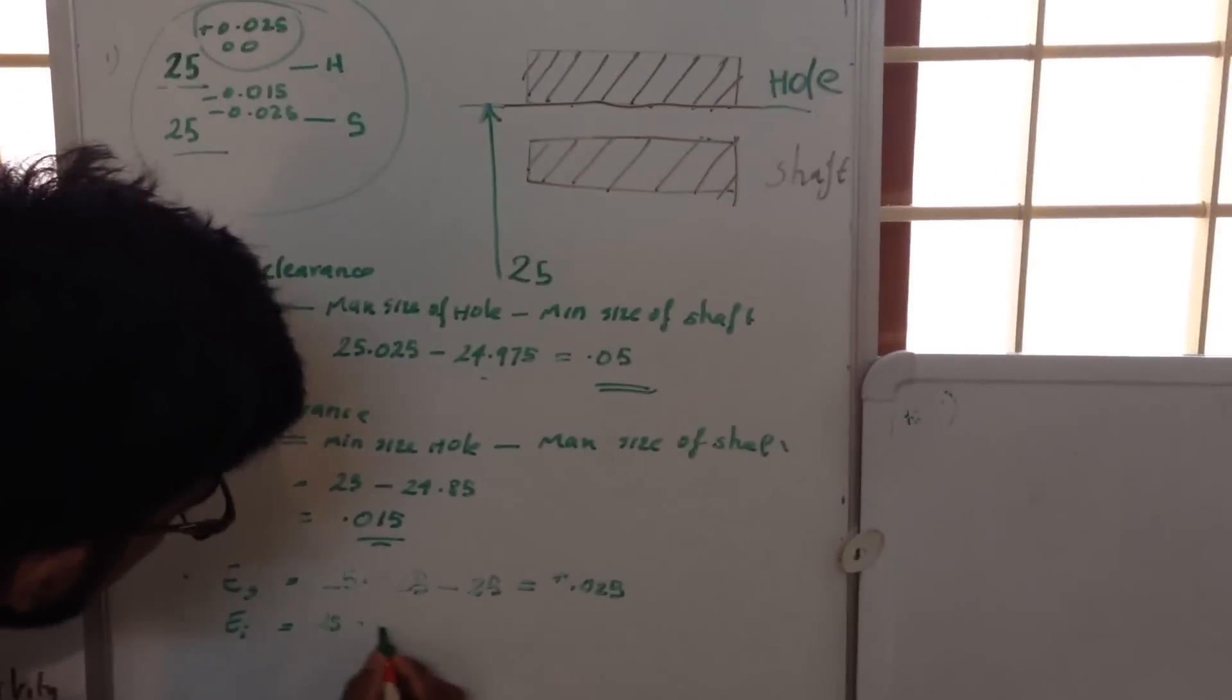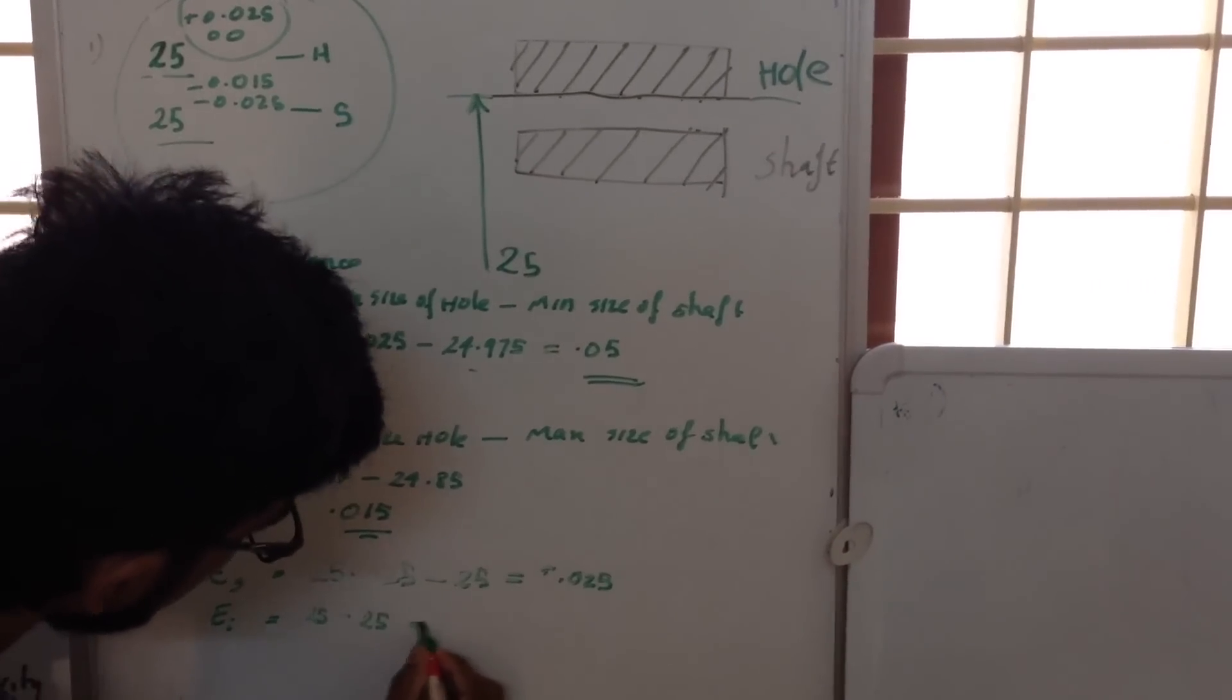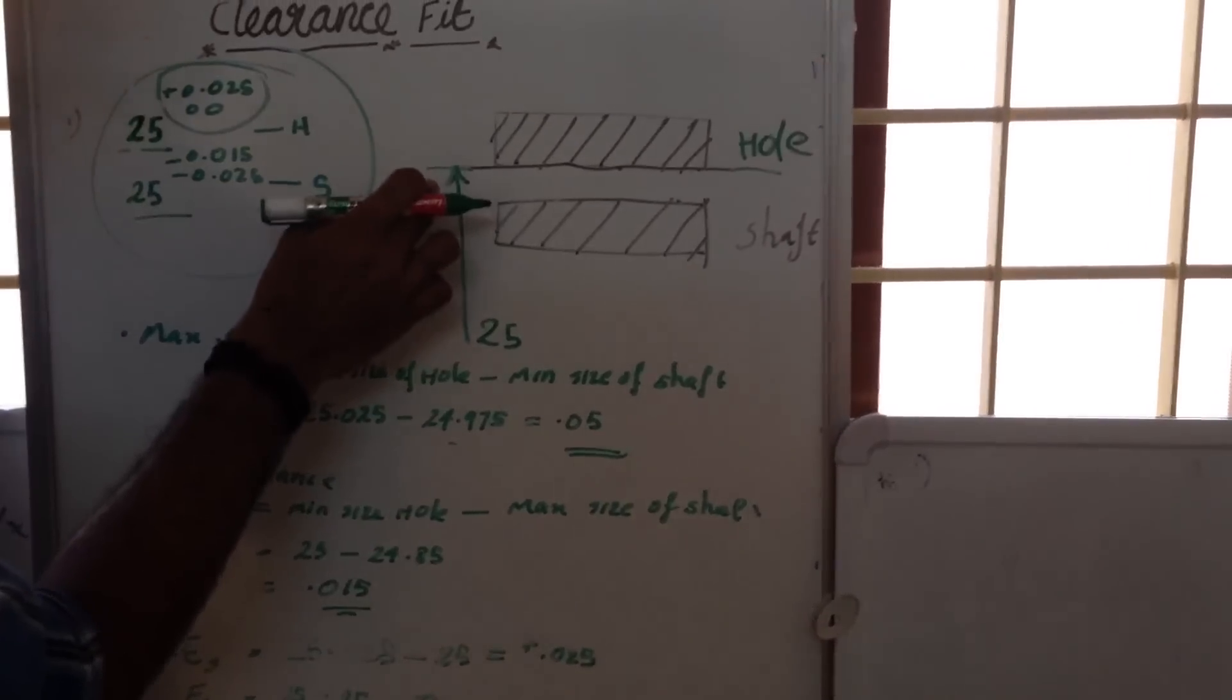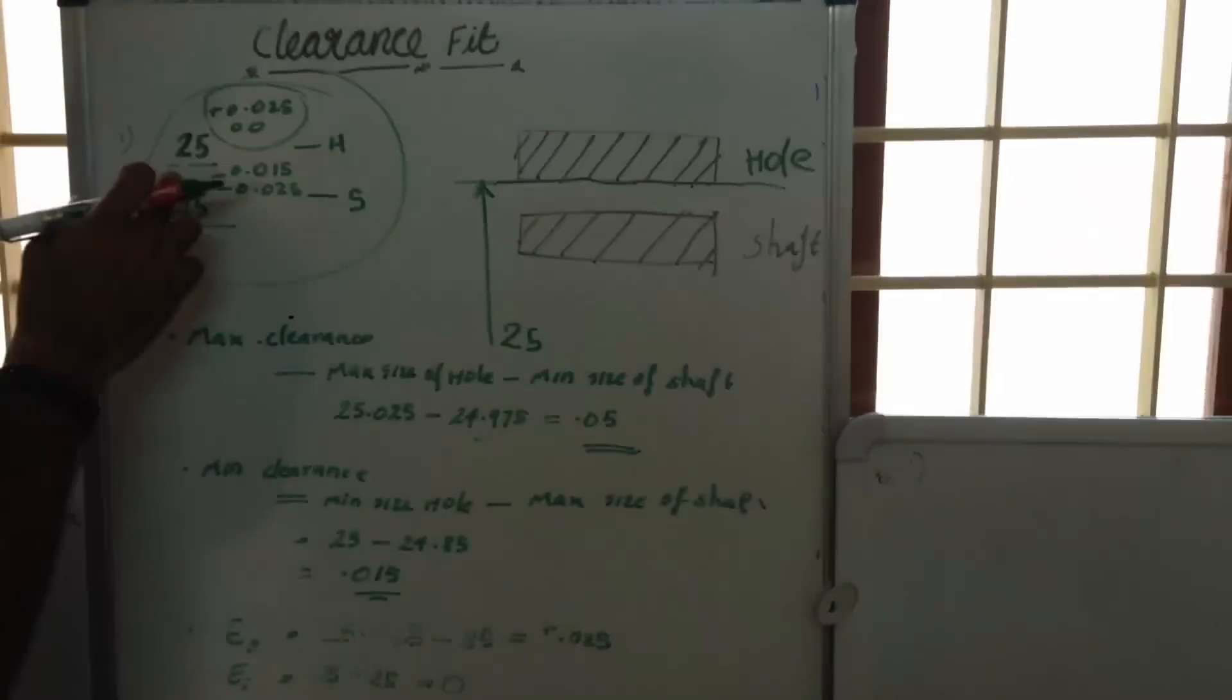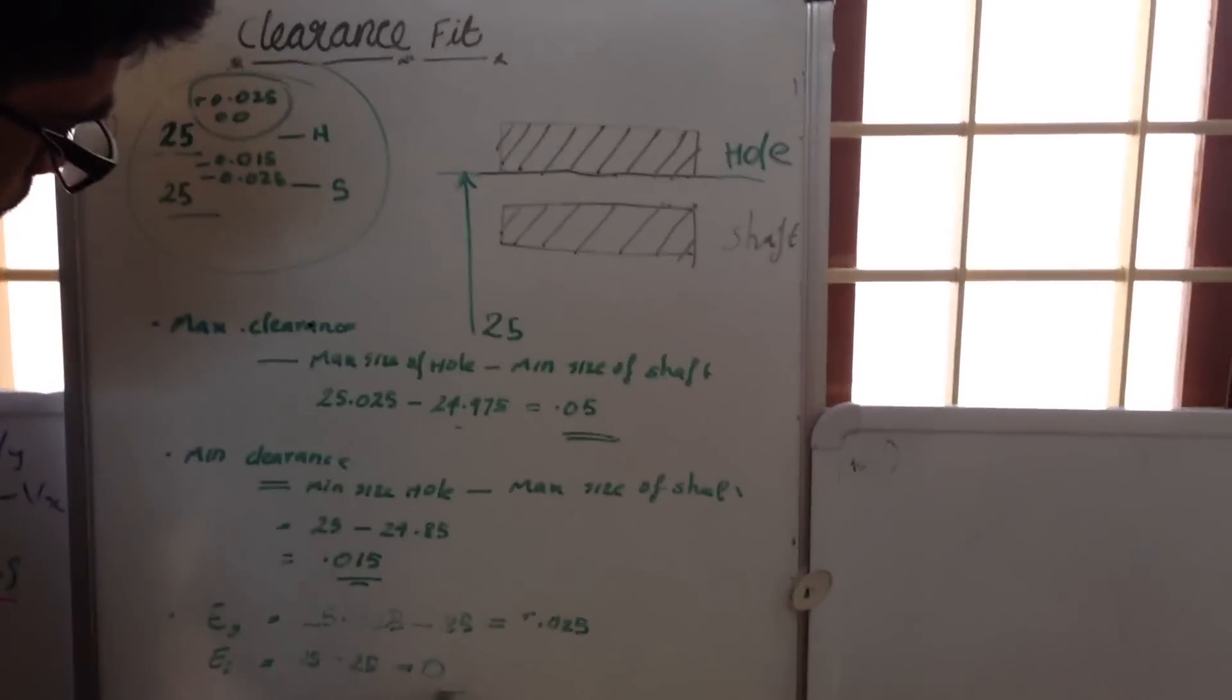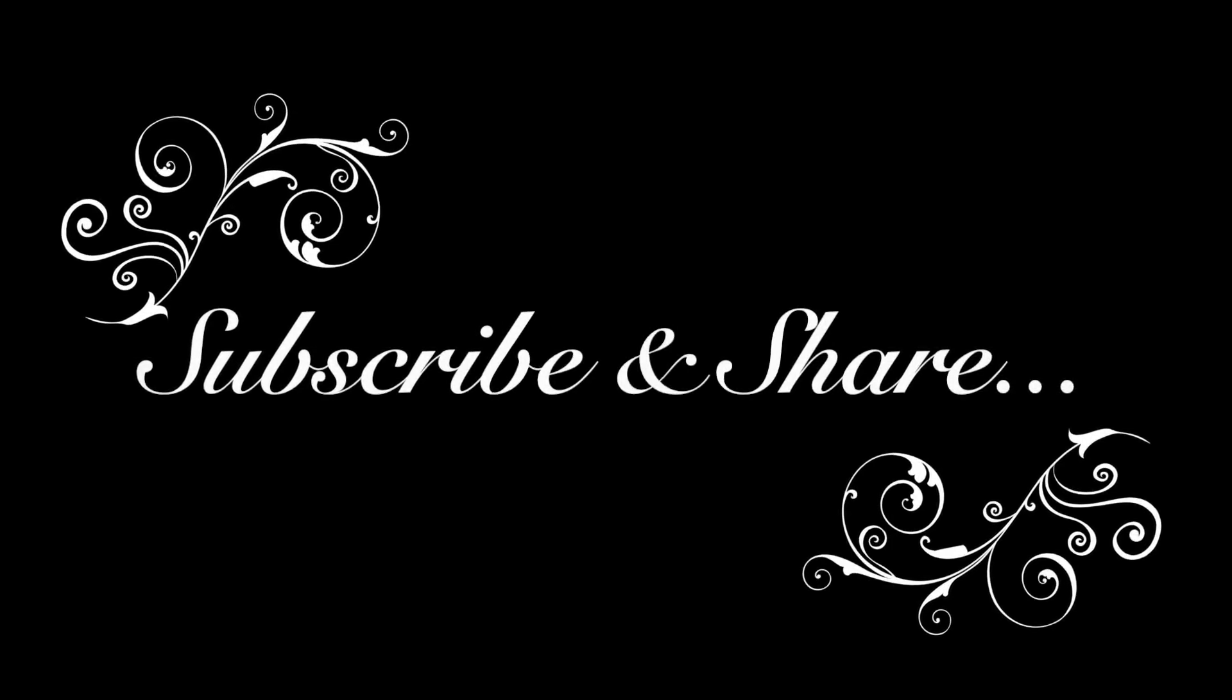For the minimum limit of hole, 25 minus 25 equals 0.